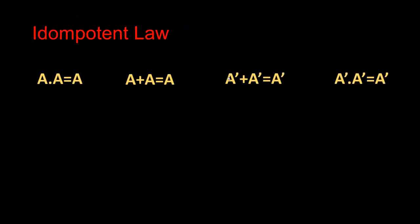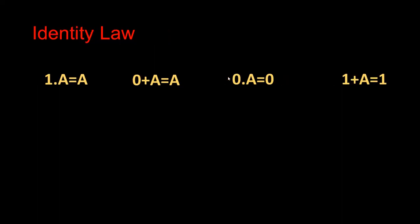Now this is the first law we learn here. You have four things: A dot A equals A, A plus A equals A, A-bar plus A-bar equals A-bar, and A-bar dot A-bar equals A-bar. Then we learn the second law, the identity law: 1 dot A equals A, 0 plus A equals A, 0 dot A equals 0, and 1 plus A equals 1.